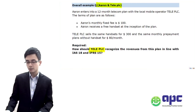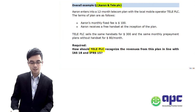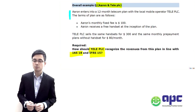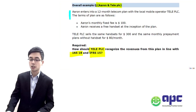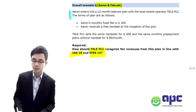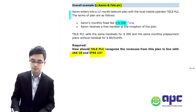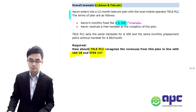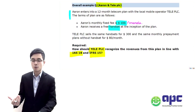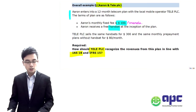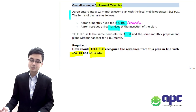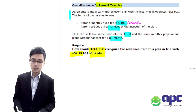How should Tele-POC recognise revenue from this plan in line with IFRS number 18 as well as IFRS number 15? Errant enters into a 12-month telecom plan with the local mobile operator, Tele-POC. The terms of the plan are: Errant's monthly fixed fee is $100 per month, and Errant receives a free-of-charge handset at the start of the plan. Tele-POC sells the same handset for $300 normally, and the same monthly plan without the mobile phone is just $80 per month.